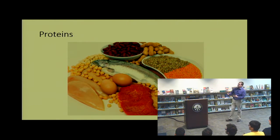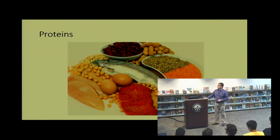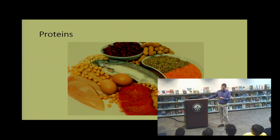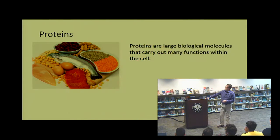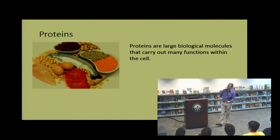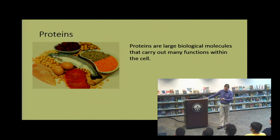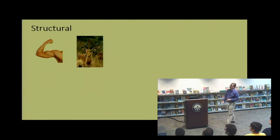So I said we're shining a light on proteins — what exactly do I mean by proteins? In everyday life, when someone talks about proteins, you think about food: the nutrients you get from fish, eggs, and meat. But for a biologist, we're interested in large biological molecules that carry out many functions within the cell. We call these foods proteins because they have a high concentration of these biological molecules.